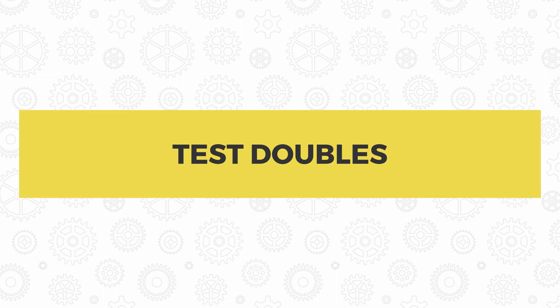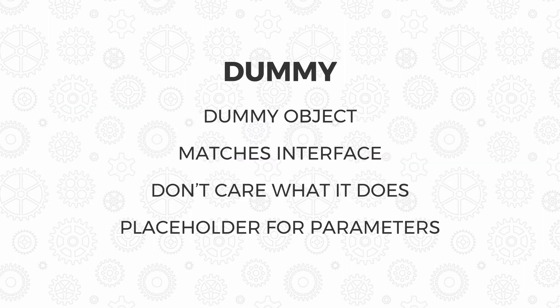As your code interacts with other modules, sometimes you want to isolate it for your unit test, and we use what's called a test double. This is a generic term for when you replace a production object with something for testing purposes — think of it like a stunt double replacing an actor for the dangerous scenes in a film.